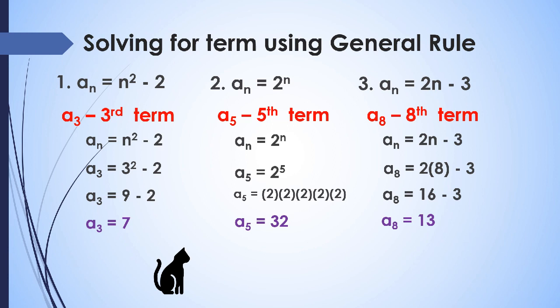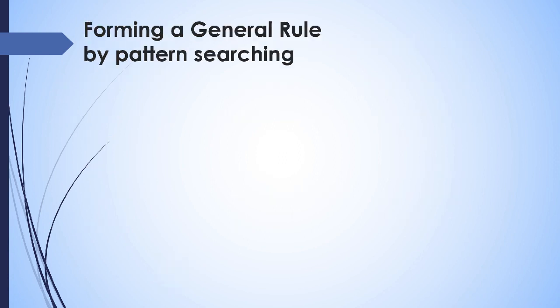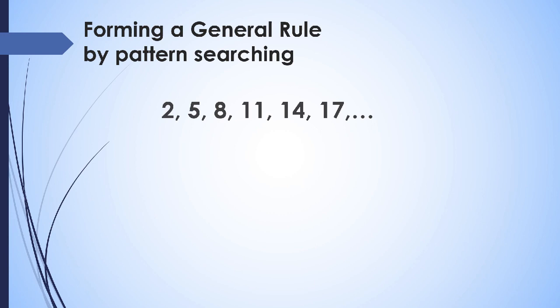Now let's do the opposite process: deriving a general rule given the terms of a sequence by pattern searching. Given the sequence 2, 5, 8, 11, 14, 17, we need to formulate a general rule. This is trial and error — we observe the terms and look for a pattern with respect to their positions, since the general rule uses a sub n and n.